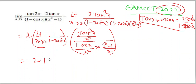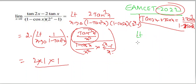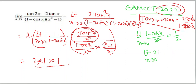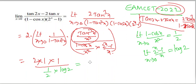Substituting x tends to 0: 1/(1-tan²x) → 1, tan³x/x³ → 1, (1 - cos x)/x² → 1/2, and (2^x - 1)/x → log 2. So the limit equals 2 · 1 · 1 · (1/(1/2)) · (1/log 2) = 2 · 2 / log 2 = 4/log 2.